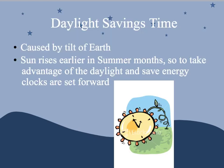Daylight savings time also has to do with space and our Earth. Daylight savings time is caused by the tilt of the Earth. Because of the way we're tilted, the sun rises earlier in the summer months. To take advantage of this daylight and save energy, our clocks are set forward. In wintertime, when we have less daylight, our clocks are set backwards for the same reasons.